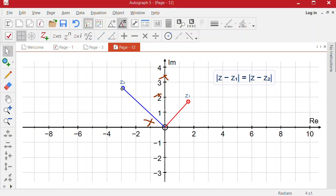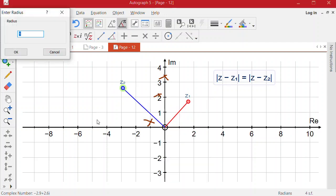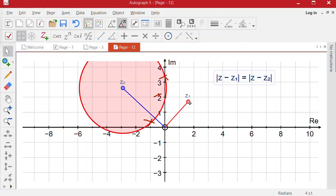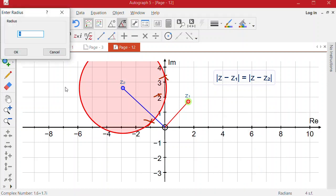If I put in two circles, so if I do a circle around z2, let's do a radius of 3. And then do the same with z1, so put in a circle and then do a radius of 3.